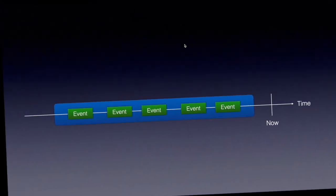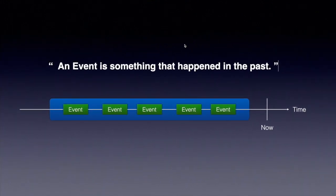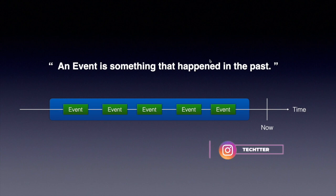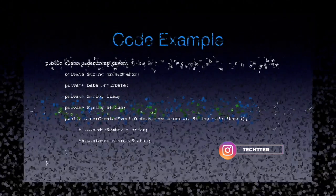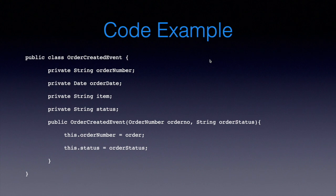An important point to note: every event is something that happened in the past — not something that is going to happen. So we should always name events explicitly in past tense. The names of events are part of the ubiquitous language of domain-driven design. For example, order created event explicitly tells that something happened in the past. Similarly, order shipment done and order payment done — all these events explicitly indicate they happened in the past.